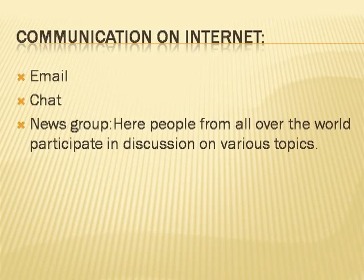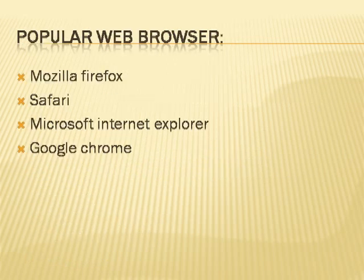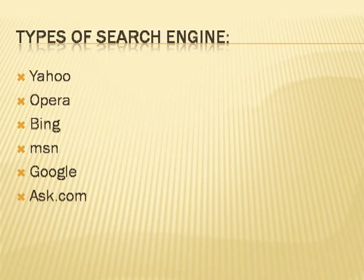Various ways of communication on the internet include email, chat, and newsgroups. Newsgroups are websites where people from all over the world participate in discussions on various topics. There are also various internet access techniques. Some of the popular web browsers and search engines are covered. In a web browser we enter the complete URL, whereas in a search engine we enter only keywords, and based on those keywords the search engine provides results.